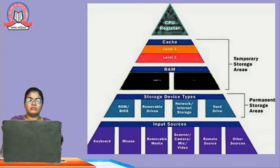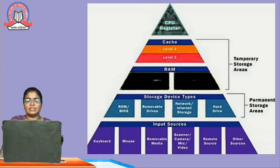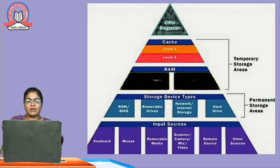Next, we are going to see the storage pyramid showing how data is stored. CPU registers are at the top where all data is stored. Input devices — keyboard, mouse, removable media, scanner, camera, mic, video, remote service, and other sources — provide the input. Permanent storage includes ROM (BIOS), removable devices, network, internet storage, and hard drive. The next level has RAM: physical RAM and virtual memory. Above that is cache: level 1 and level 2. Finally, data is stored in the CPU register.